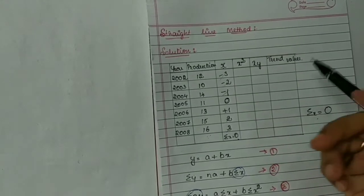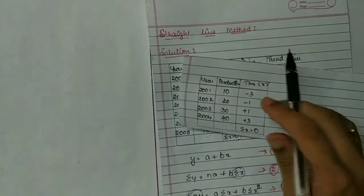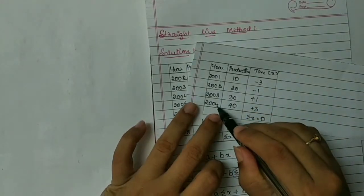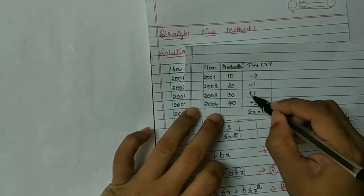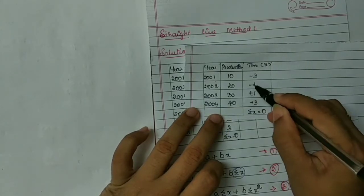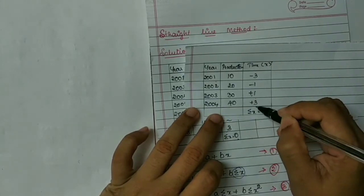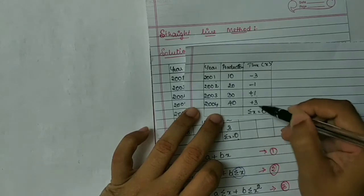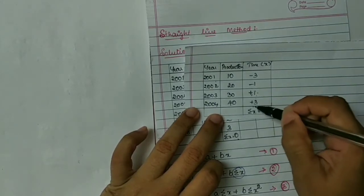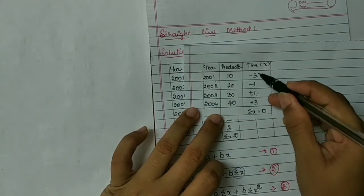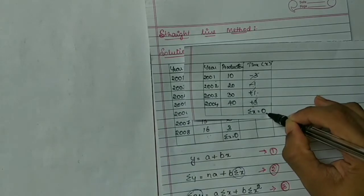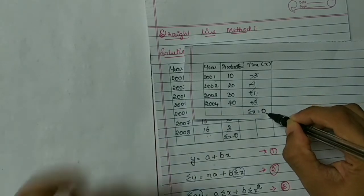Since odd numbers of years are given, we could start with 0. But when even numbers of years are given — for example, only 4 years — we start with odd numbers: 1, 3, 5, 7. So here it will be plus 1, plus 3, minus 1, minus 3. They all cancel and summation x will be 0.